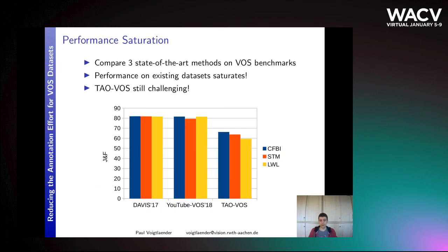We evaluate three state-of-the-art VOS methods on previous benchmarks and our new benchmark. On Davis 2017 and YouTube VOS 2018, performance saturates — all three methods achieve around 80% with very small differences between them. However, on the new benchmark, differences between methods are still visible, and the absolute result level is much lower at around 60%, leaving much room for improvement for future methods.